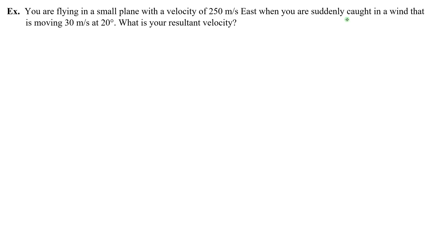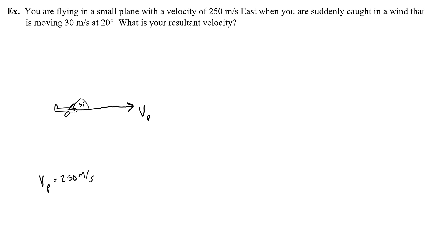You are flying in a small plane with a velocity of 250 meters per second east, when you are suddenly caught in a wind that is moving 30 meters a second at 20 degrees. What is your resultant velocity? In this problem, basically here's the plane. The plane has a velocity east — we could call that vp — and the magnitude is 250 meters a second. Then suddenly, a wind moving 30 meters per second at 20 degrees, which we'll assume is relative to east, so we'll just draw an angle of 20 degrees above this. 30 meters a second is pretty small, so it would kind of look like that.